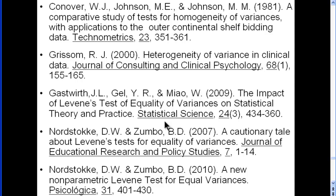In terms of recommendations: when you have normally distributed data, you should use the plain ordinary Levene's test based on the mean. If your data are not normally distributed and/or your sample sizes are unequal, you are better off using the non-parametric Levene test based on ranks. This effectively leaves the Levene median-based test aside, since it is less powerful than the mean-based test under normality, while the non-parametric test is more powerful and robust under non-normality and unequal sample sizes.